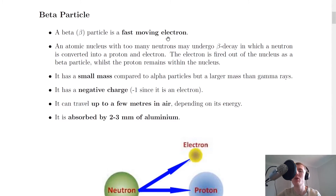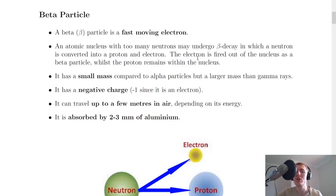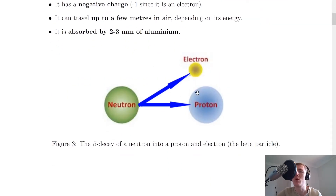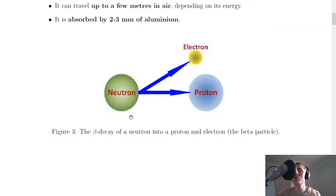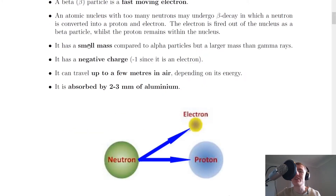Moving on to the beta particle: a beta particle is a fast-moving electron, and we give it the symbol beta. An atomic nucleus with too many neutrons may undergo beta decay, in which a neutron is converted into a proton and an electron. The electron is fired out of the nucleus as a beta particle, whilst the proton remains within the nucleus. This picture demonstrates that process — the neutron undergoes beta decay, turning into a proton and emitting an electron, i.e. the beta particle.